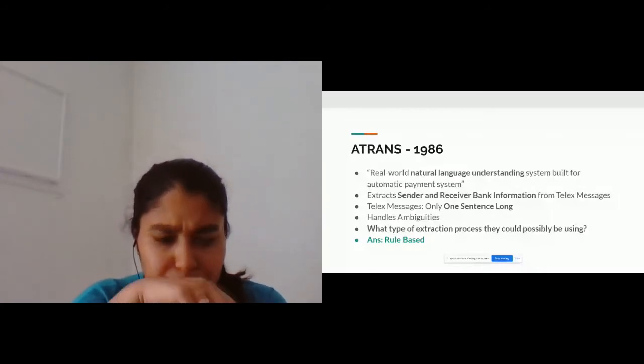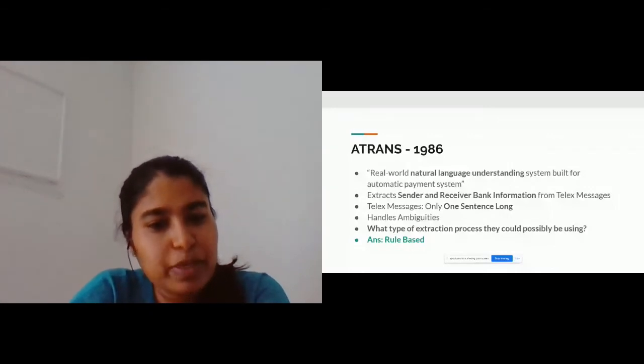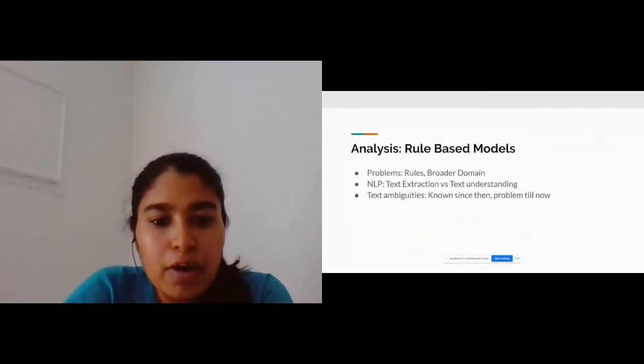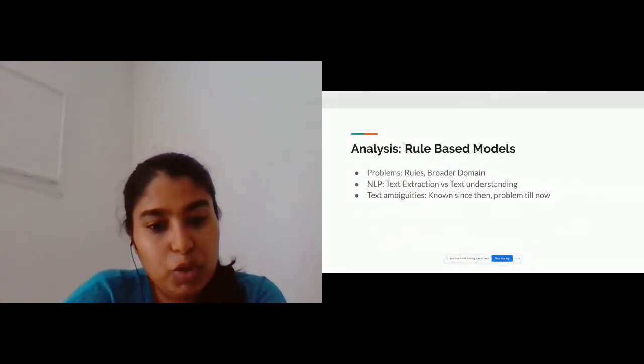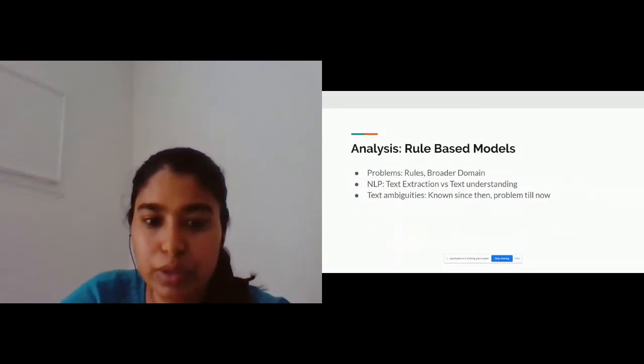Any guesses how this model could have been implemented? Yes, it was rule-based models. And this was also one of the most common problems with these types of models. For every unseen case, a new rule was required, taking down the robustness of the model. Also, was this model even understanding the text or just extracting it? It was just extracting, right? Not understanding as it claimed to be.